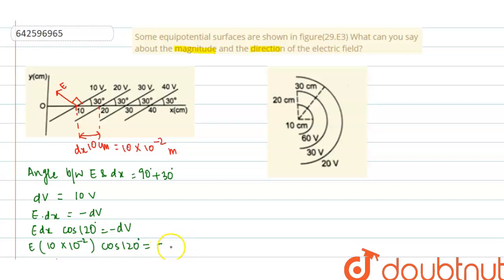Therefore we will get E is equals to 200 volt per meter. This is about the magnitude. Now the direction will be 120 degrees from the x-axis, right?